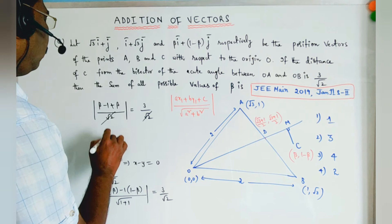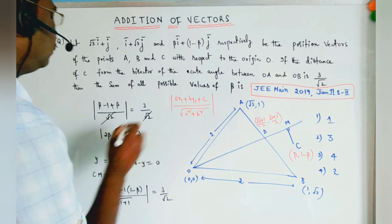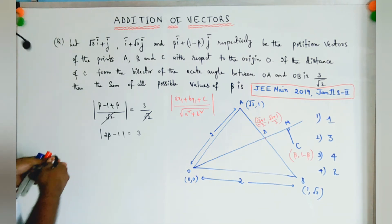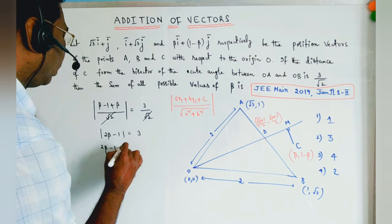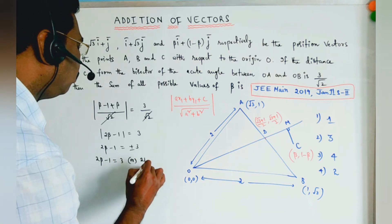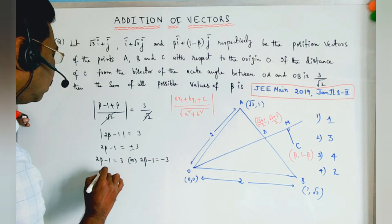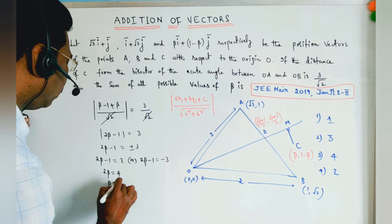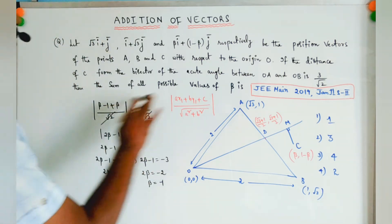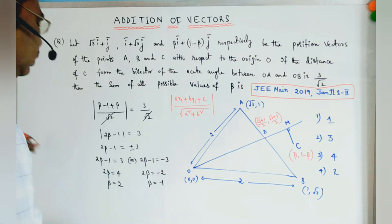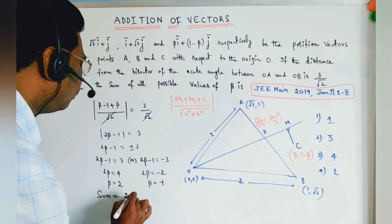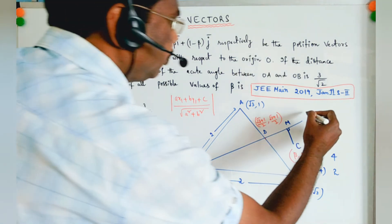So 2β − 1 = ±3. Case 1: 2β − 1 = 3 → 2β = 4 → β = 2. Case 2: 2β − 1 = −3 → 2β = −2 → β = −1. The sum of all possible values of β = 2 + (−1) = 1. Option 1 is the correct answer.